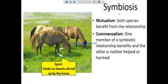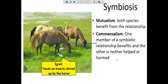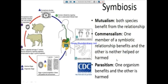The second type of symbiotic relationship is commensalism. Commensalism means one member benefits and the other is neither helped nor harmed. For example, here we have a horse and an egret. The egret feeds on insects stirred up by the horse, which helps the horse get rid of annoying insects. But the egret can feed on insects anywhere, so the horse is not harmed. This relationship is beneficial only to the egret, and we call it commensalism.